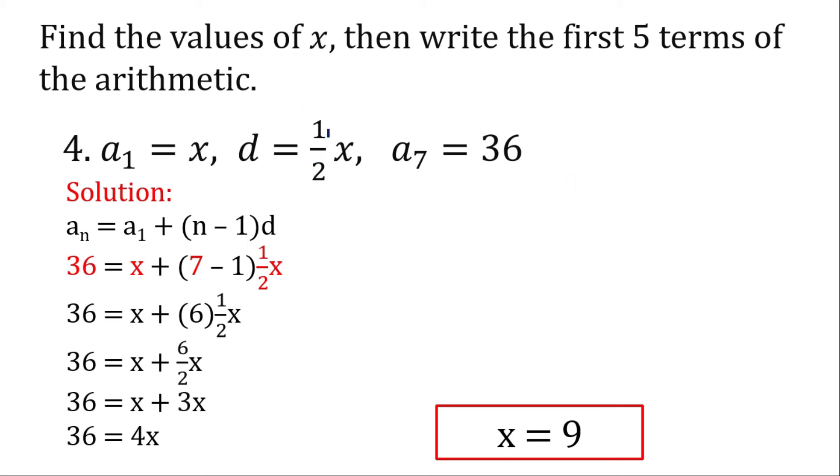So our value of our x, our first term is 9. Then the value of this is 1 half times 9 is equal to 9 over 2. Now 9 divided by 2 is 4.5. So we have 9 here and this will be 4.5. So our first term is 9.